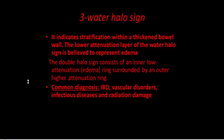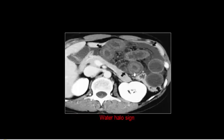The water halo sign indicates stratification within the thickened bowel wall. The lower attenuation layer of the water halo represents edema. The double halo sign consists of an inner low attenuation ring surrounded by an outer high attenuation ring. Common diagnoses include IBD, vascular disorder, infectious diseases, and radiation damage. Examples show low attenuation layers due to edema at the outer echogenic layer, forming a double layer — the water halo sign.